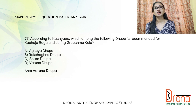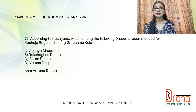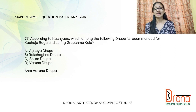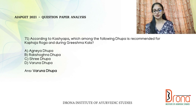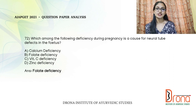The next question: according to Kashyapa, which dhupa is recommended for kabaja rogam during Grishma Kalam? In Kashyapa Samhita Kalpa Sthanam, 40 different types of dhupas are explained. For kabaja rogam and during Grishma Kalam, and for Shakuni, Paundrika, Revati grahams etc., Varuna Dhupam is indicated. Agneya Dhupam is told 'brahmana nam visheshena sarvarogeshu shasyate,' and Shri Dhupam is for Shri Kamesh.